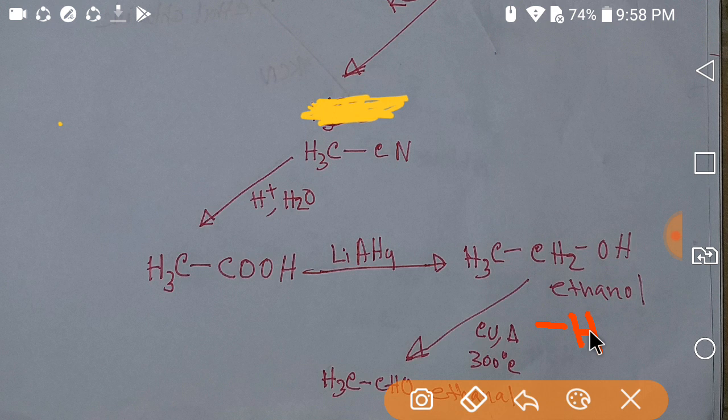Ethanal is an aldehyde. If you oxidize ethanal with potassium dichromate and sulfuric acid, it converts to ethanoic acid — one oxygen is added to the carbon. Then, if you add phosphorus pentachloride to ethanoic acid, the OH group is replaced by Cl from PCl₅, and you get ethanoyl chloride.